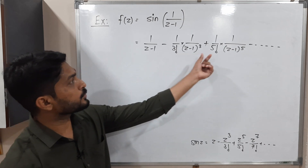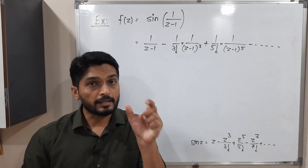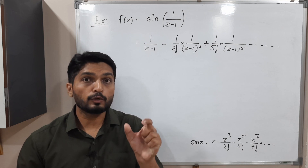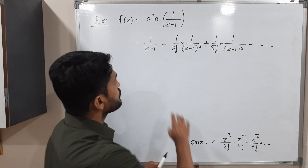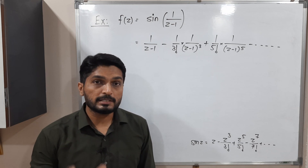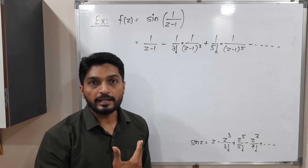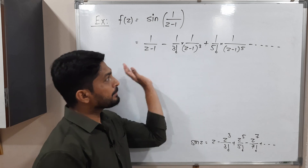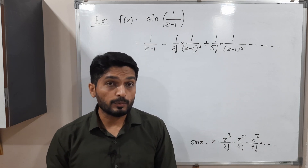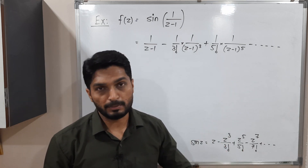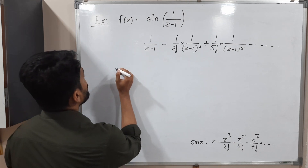This is the Laurent expansion of the given function f(z) at z equals one. Since (z minus one) appears in the denominator everywhere, what is the analytic part? In the analytic part (z minus one) would appear in the numerator, but there is no such term, so there is no analytic part. The entire part is the principal part. In each and every term we find the bracket (z minus one) and its power in the denominator. There are infinitely many terms in the principal part, so the principal part is not terminating — and that is why it is an isolated essential singularity.